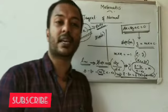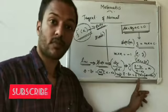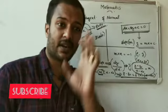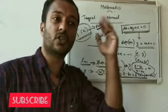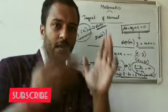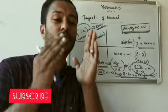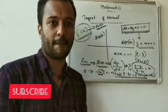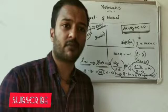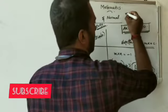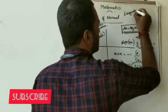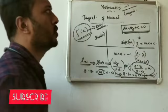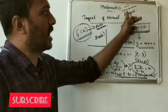The normal equation: minus 1 by f dash of x. Tangent and normal are mutually perpendicular. Mutually perpendicular — minus 1 divided by tangent slope.